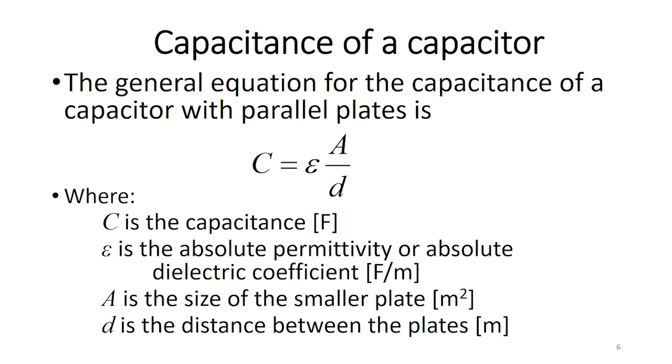The general equation for the capacitance of a capacitor with parallel plates is C equals epsilon times A over D, where C is the capacitance in Farad, epsilon is the absolute permittivity or absolute dielectric coefficient in Farad over meter, A is the size of the smaller plate in square meters, and D is the distance between the plates in meters.